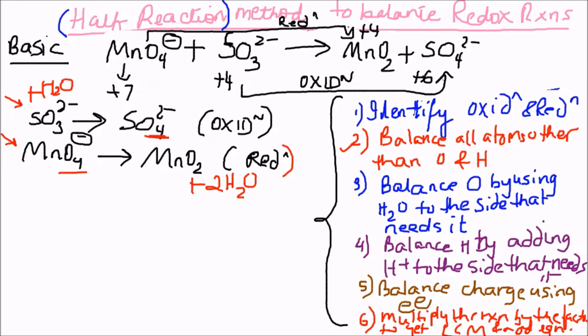Step four: balance hydrogen by adding protons to the side that needs it. For the oxidation half, one H2O gives two hydrogens, so add two protons to the right-hand side. For the reduction half, two H2O gives four hydrogens, so add four protons to the left-hand side.